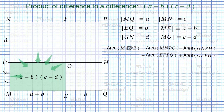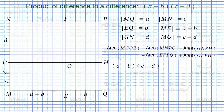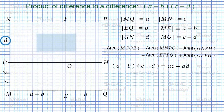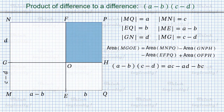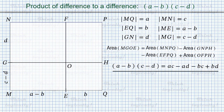The area of rectangle MGOE is a minus b times c minus d. The area of the whole rectangle MNPQ is a times c. The area of rectangle GNPH is a times d. The area of rectangle EFPQ is b times c. And the area of rectangle OFPH is b times d. We obtained exactly what we expected. In particular, assuming c equals a and d equals b, we get the identity for the difference of two numbers squared.